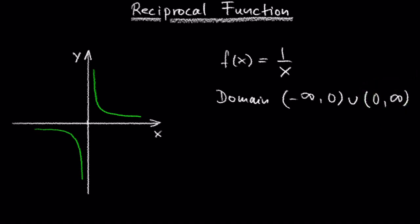What about the range of this function? We see the bigger x gets, the smaller the output gets. When we plug in a 1, we get a 1 as an output. When we plug in a 10, we get a 0.1.